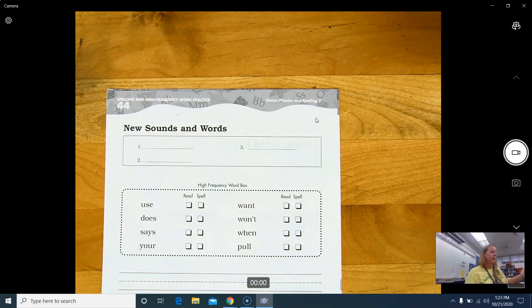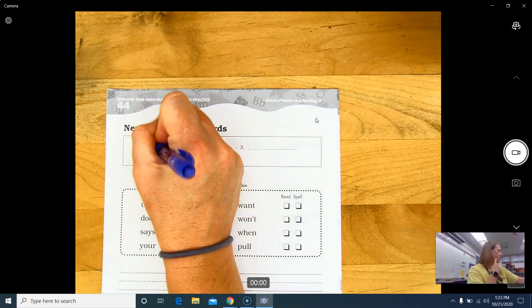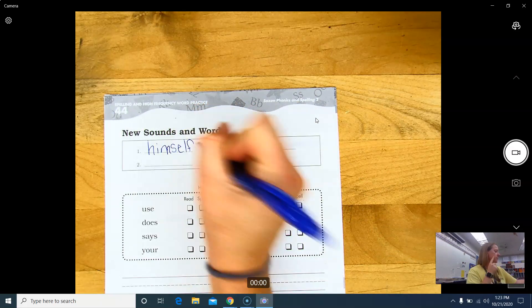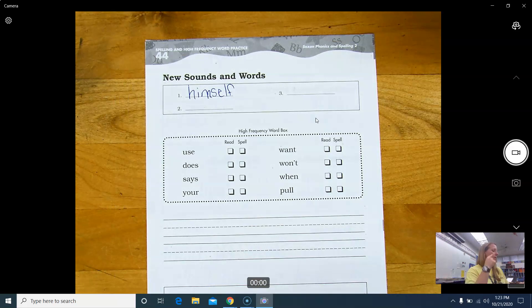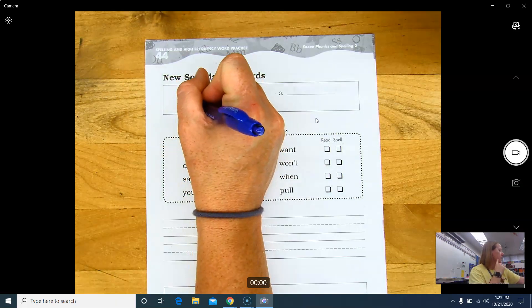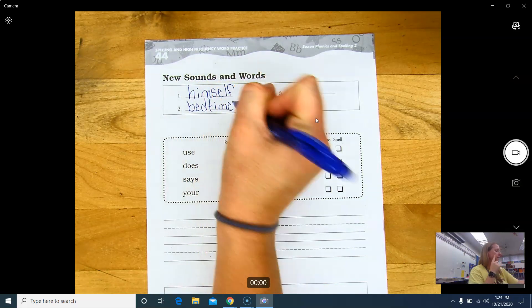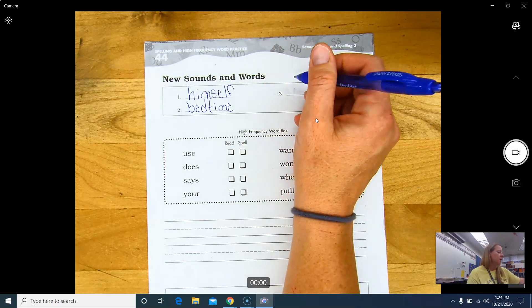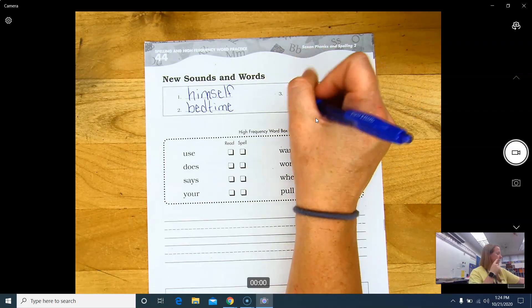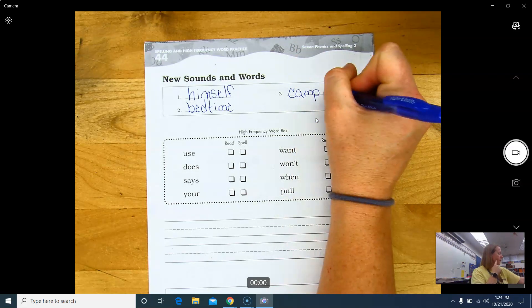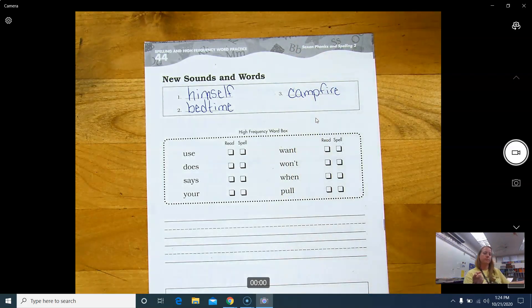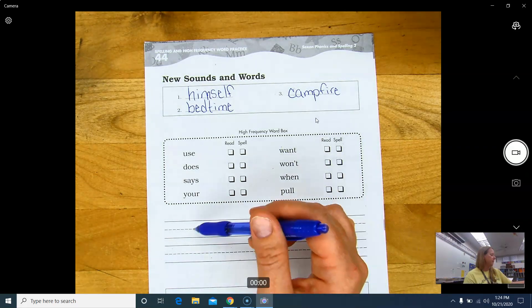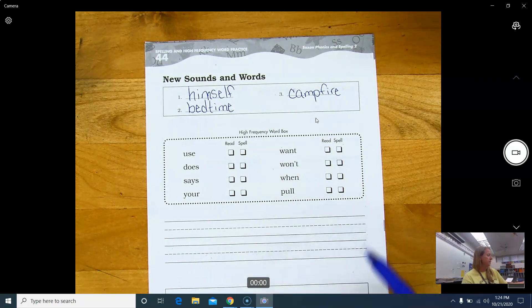Go to your new sounds and words. Number one is, echo after me, himself. H-I-M. Him. Sorry for that crazy M right there. Self. S-E-L-F. Bedtime. B-E-D-T-I-M-E. Which means time for bed. Right? Himself. He's just by himself. Number three. Campfire. Camp. C-A-M-P. Fire. F-I-R-E. Okay. Remember to practice spelling your high frequency words. Reading and spelling them. And write a couple of the words. Not all of them. But a couple. There's only two lines. In complete sentences.